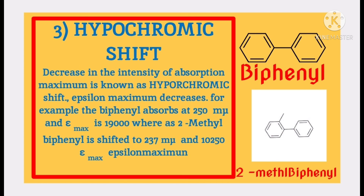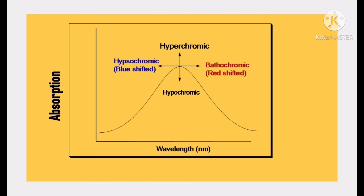For example, biphenyl absorbs at 250 millimicrons with epsilon maximum of 19,000, whereas 2-methylbiphenyl is shifted to 237 millimicrons with epsilon maximum of 10,250. These are all four types of shifts occurring in UV spectroscopy.